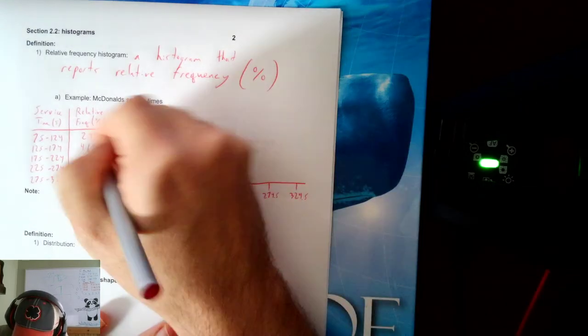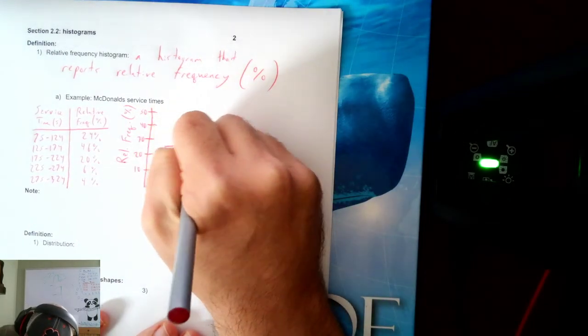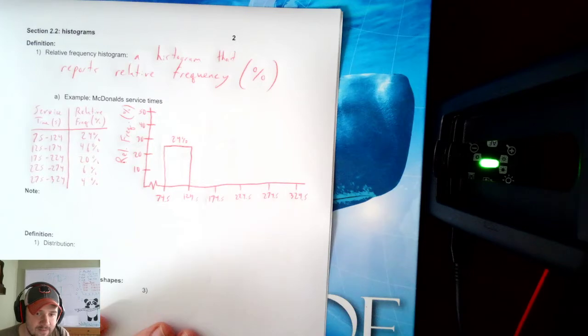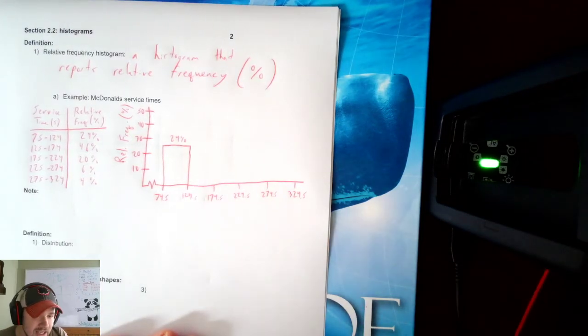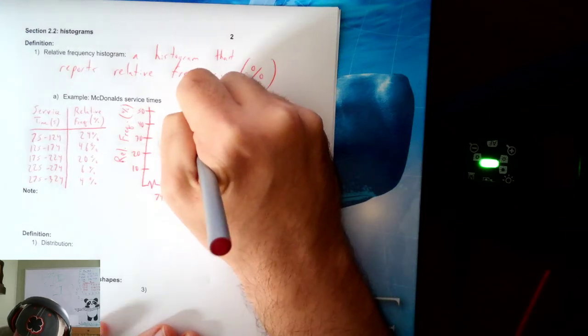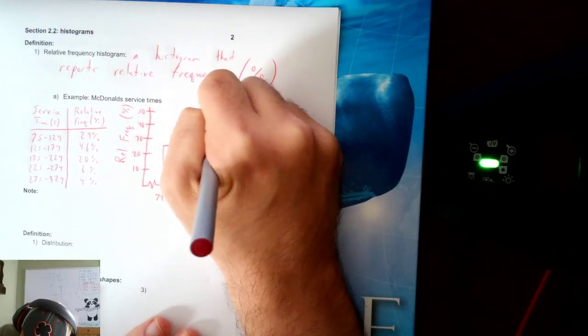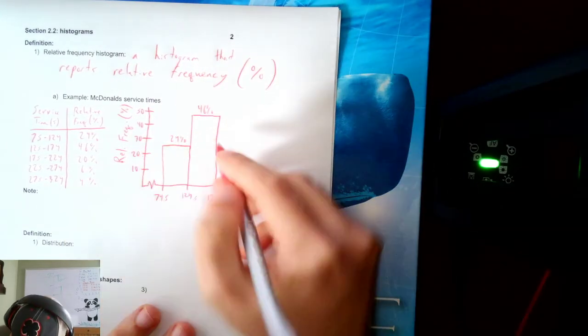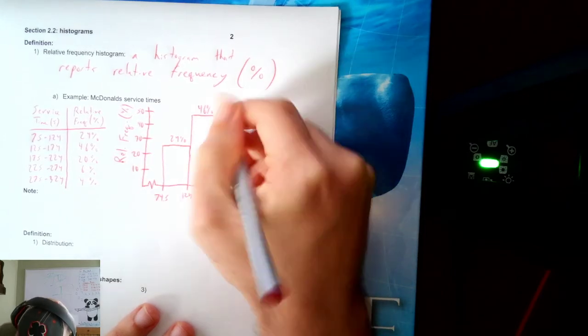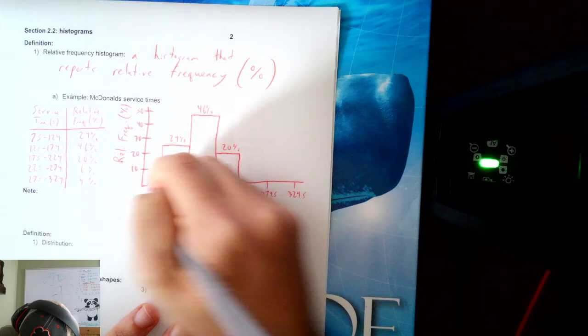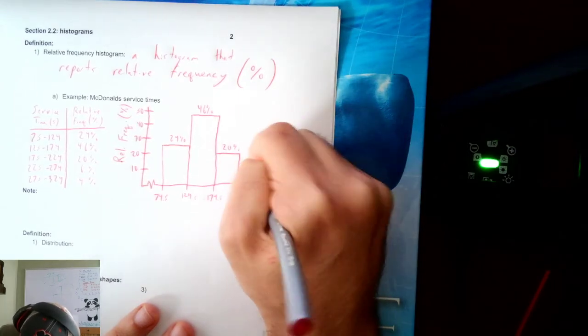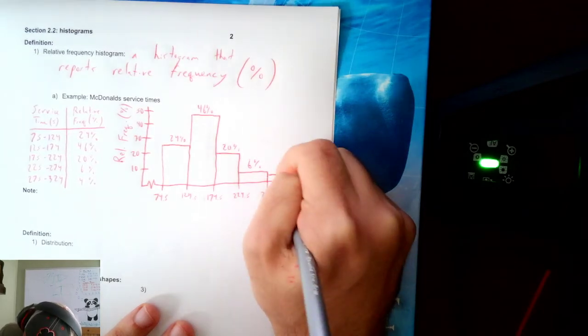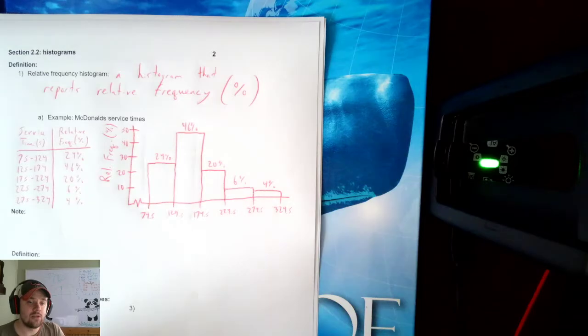Now I draw my bars. 24%, that'll be about here. And I like to put a little 24% on top just because I'm hand drawing it. The bars still touch. It's still a histogram. So my next bar will touch and go up to 46%. Next would be 20%, that's chilling right about here. Next would be 6%, that's going to be a little below 10. And then last would be 4%, that'll be a little below 6.